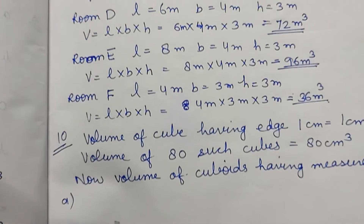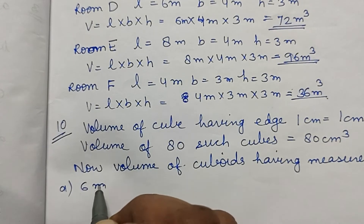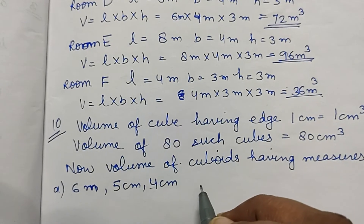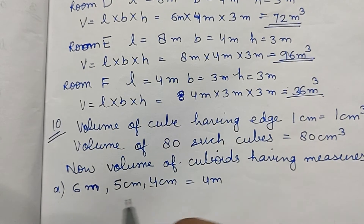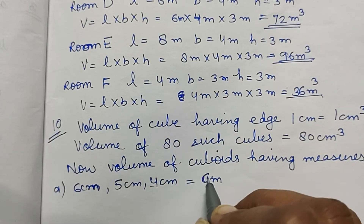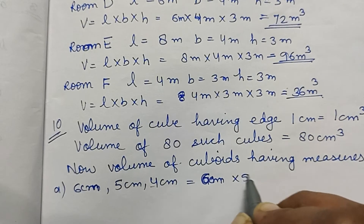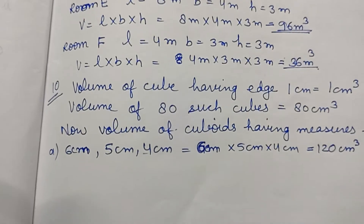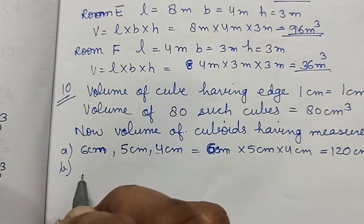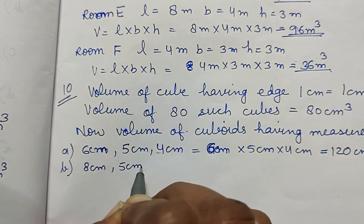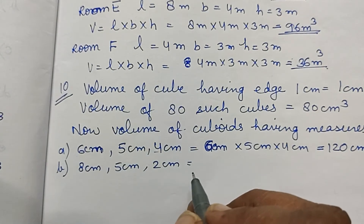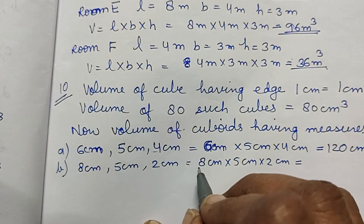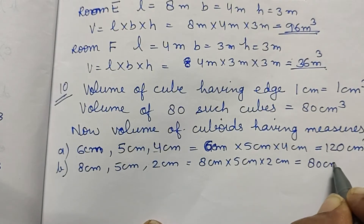Cuboid A: dimensions are 6 cm, 5 cm, and 4 cm. Volume equals 6 into 5 into 4 equals 120 centimeter cube. Cuboid B: dimensions are 8 cm, 5 cm, and 2 cm. Volume is 8 into 5 into 2 equals 80 centimeter cube.